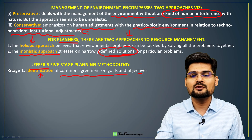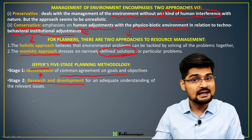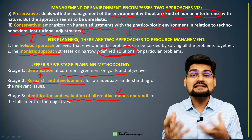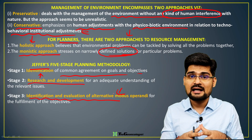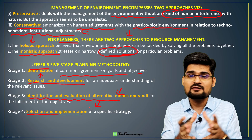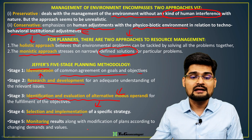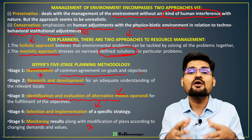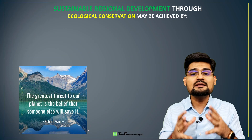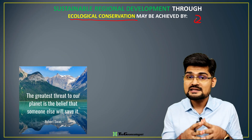A scholar called Jeffer gave a methodology for this planning process. The steps are: first, identification of common agreement on goals and objectives; second, research and development to find issues and challenges; third, identification and evaluation of alternative modus operandi; fourth, implementation and selection of a specific strategy for regional development; and finally, constant monitoring and feedback.